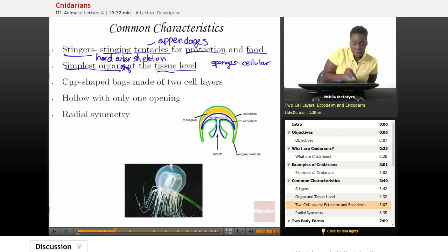Cnidarians also are formed from this cup-shaped bag, and that cup-shaped bag is made up of two cell layers. The two cell layers have names. The first cell layer is called an ectoderm. And that's the outer layer of the Cnidarian, which is made up of those stinging cells.